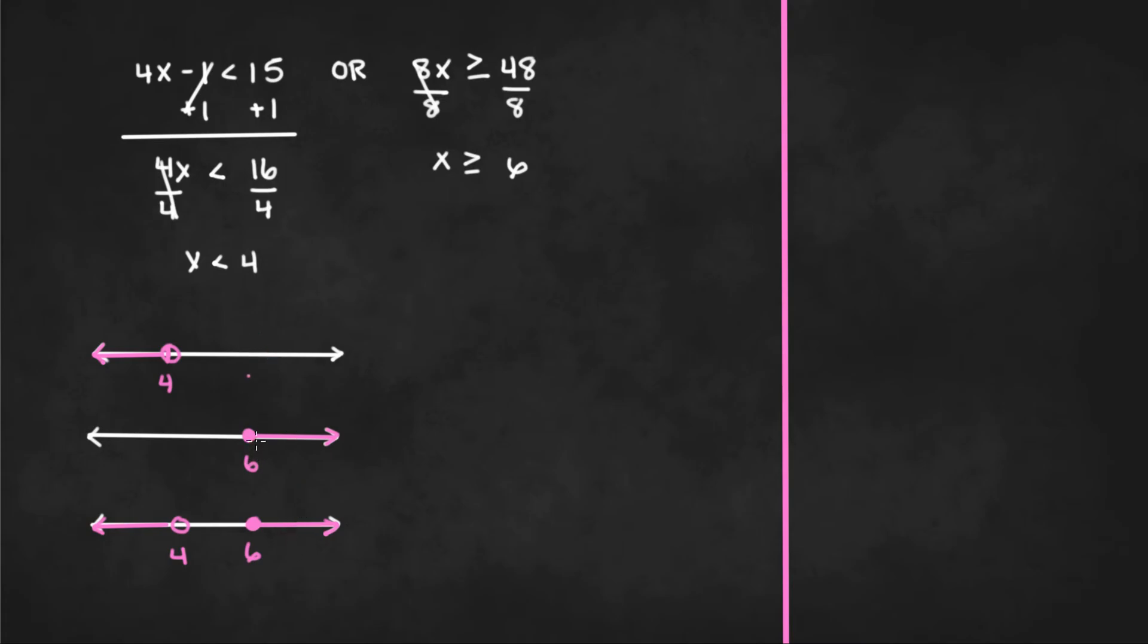Now you don't have to do the first two steps of drawing two number lines. If you're only given one number line, you could graph both inequalities on one number line.